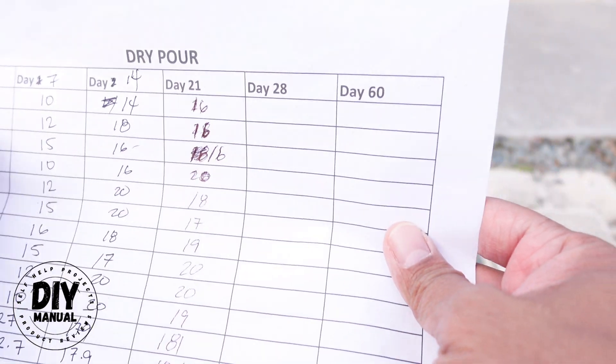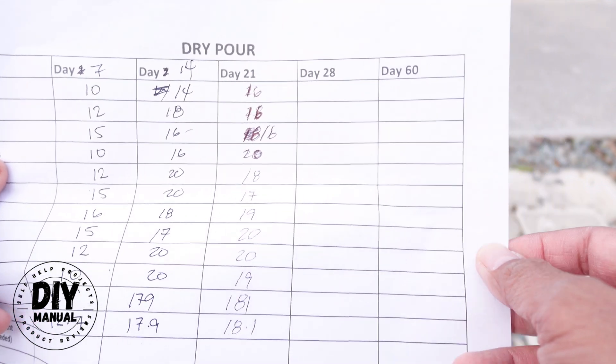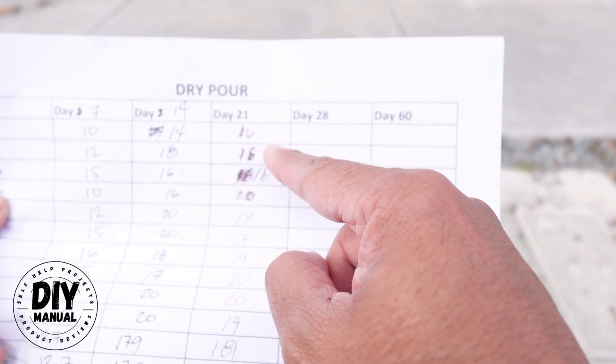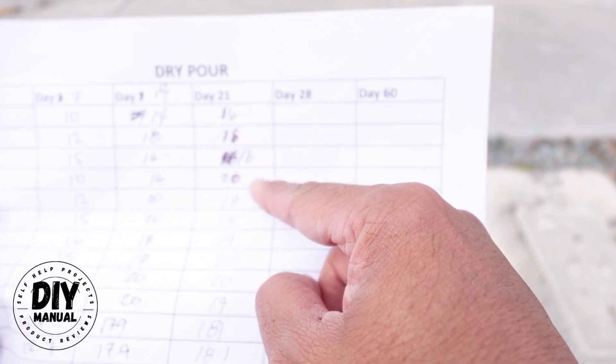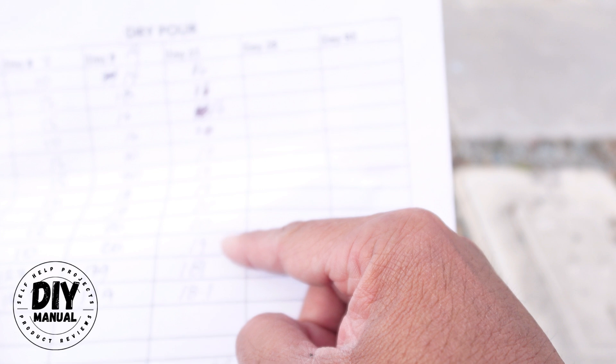So this is the numbers that I got. Hopefully you can see that. I cannot see my screen because it's bright outside. Day 21, test one, I got a 16, a 16, a 16, a 20, 18, 17, 19, 20, 20, 19.